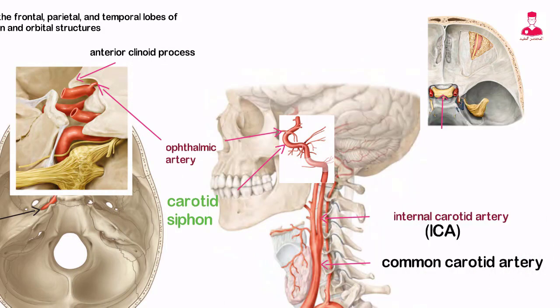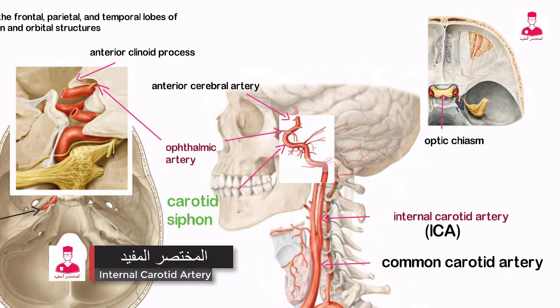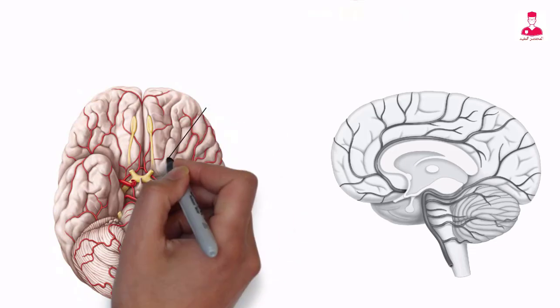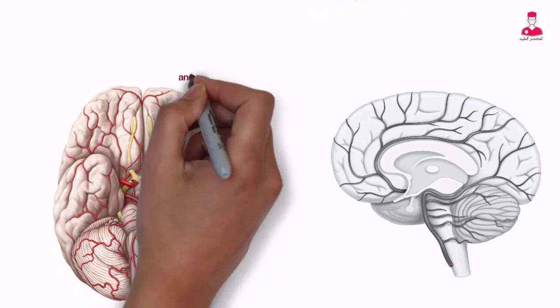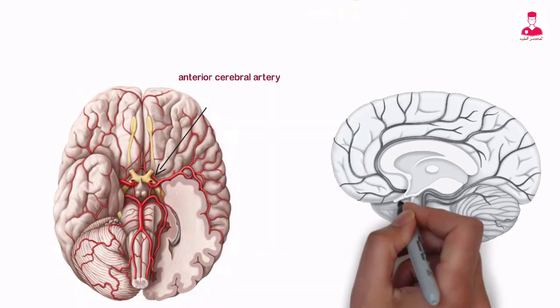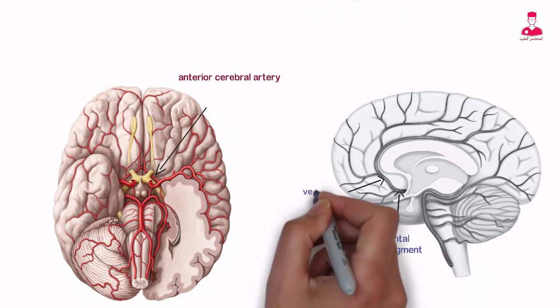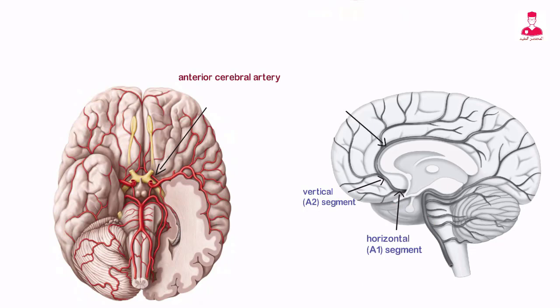The ICA then runs lateral to the optic chiasm and branches into the anterior cerebral artery and the larger middle cerebral artery. The anterior cerebral artery and its branches supply the anterior frontal lobe and the medial aspect of the parietal lobe. The main segments and branches of the anterior cerebral artery are the horizontal segment, the vertical segment, and the distal segment.